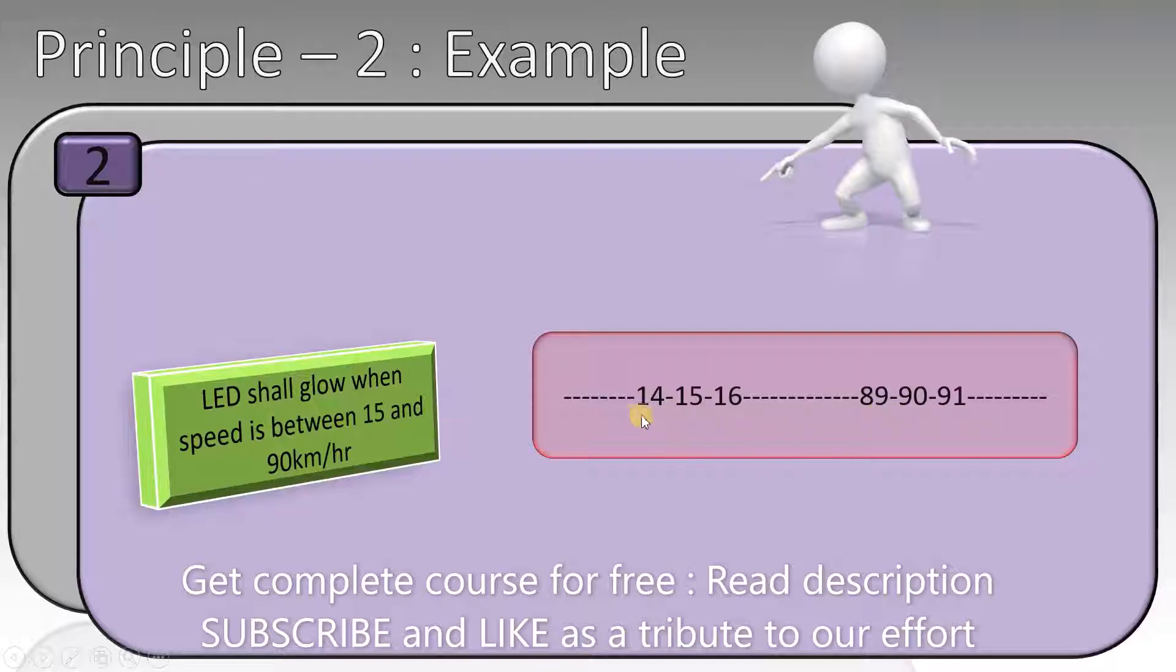So when we do the testing, the LED should not glow at 14 or 91. It should only work for values between 15 and 90, like 16 and 89. So only by using six values, we can test if the software meets the customer's requirements.